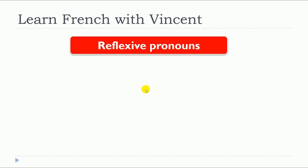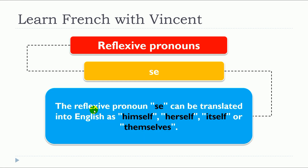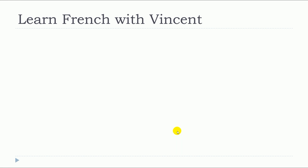This lesson is about « se ». The reflexive pronoun « se » can be translated into English as « himself », « herself », « itself » or « themselves ».